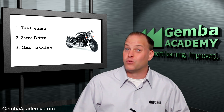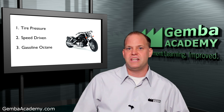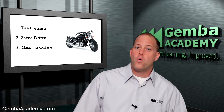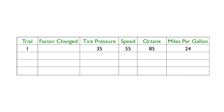Once the test station is prepared, we're ready for our first trial, setting tire pressure to 35 psi, running the motorcycle at 55 miles per hour, while using 85 octane gasoline. We run the motorcycle until all the fuel is used, which allows us to calculate the miles per gallon — resulting in 24 miles per gallon. We then decide to see if changing tire pressure has any influence, so we inflate the tires to 40 psi but keep the other two factors the same. When we finish that trial, we discover 32 miles per gallon — meaning 40 psi definitely seems to be the best tire pressure.